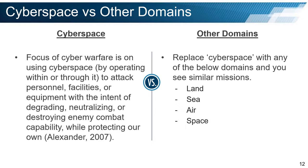However, this does not make sense. For those unfamiliar with the six joint warfighting functions, they are mission command, movement and maneuver, intelligence, fires, sustainment, and protection. These are unique functions executed in the warfighting domains. One cannot execute one function within or through another — one could not, for example, conduct mission command through fires. You can, however, conduct mission command through cyberspace. In fact, you can conduct elements of all the warfighting functions in and through cyberspace. Thus, logic dictates the military was correct in designating cyberspace as a warfighting domain.